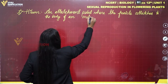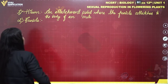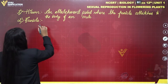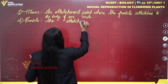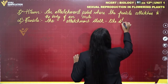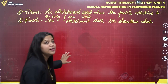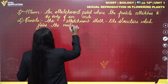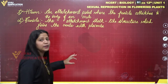The second structure is the funicle. What is the funicle? It is a stalk-like attachment structure which joins the ovule with the placenta inside the ovarian cavity or locule.